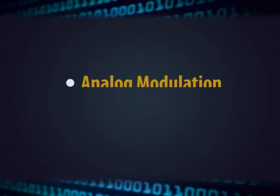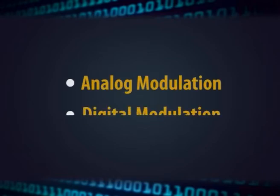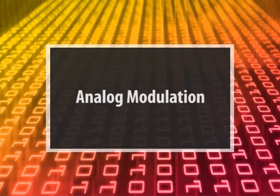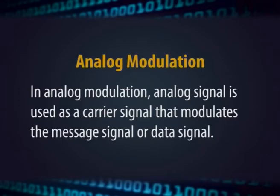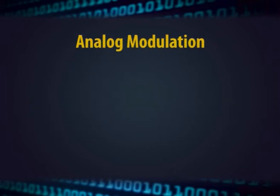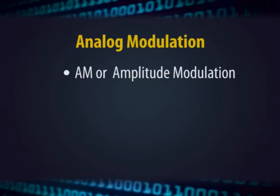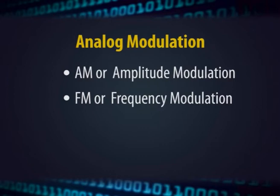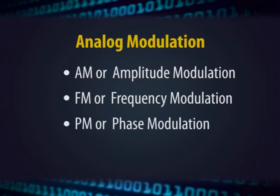The modulation technique is broadly classified as analog modulation and digital modulation. In analog modulation, an analog signal is used as a carrier signal that modulates the message signal or data signal. There are three basic types of analog modulation: AM or amplitude modulation, FM or frequency modulation, and PM or phase modulation.